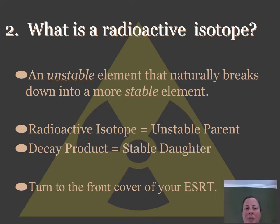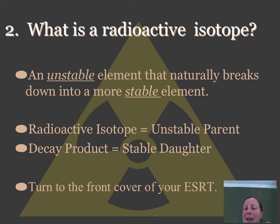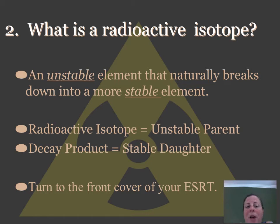Some of the definitions we need to discuss are radioactive isotopes. Radioactive means that something is unstable and it naturally breaks down into something more stable. Our radioactive isotope is called the unstable parent element, and the decay product is called the stable daughter element.